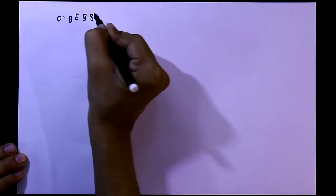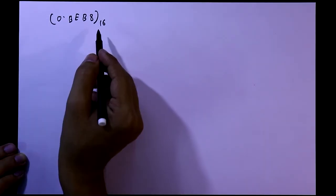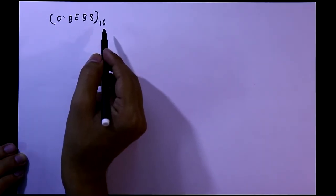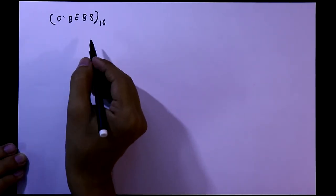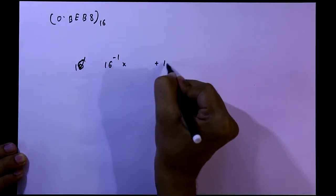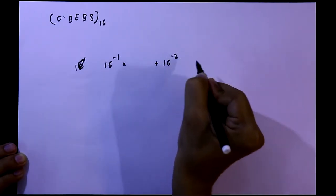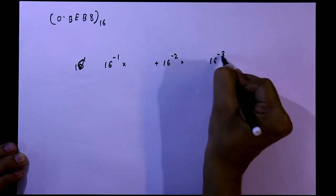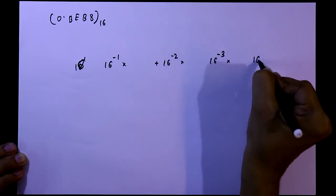Now we have to find out the fractional part. To find out the decimal equivalent, we have to write 16 to the power minus 1, 16 to the power minus 2, 16 to the power minus 3, 16 to the power minus 4.